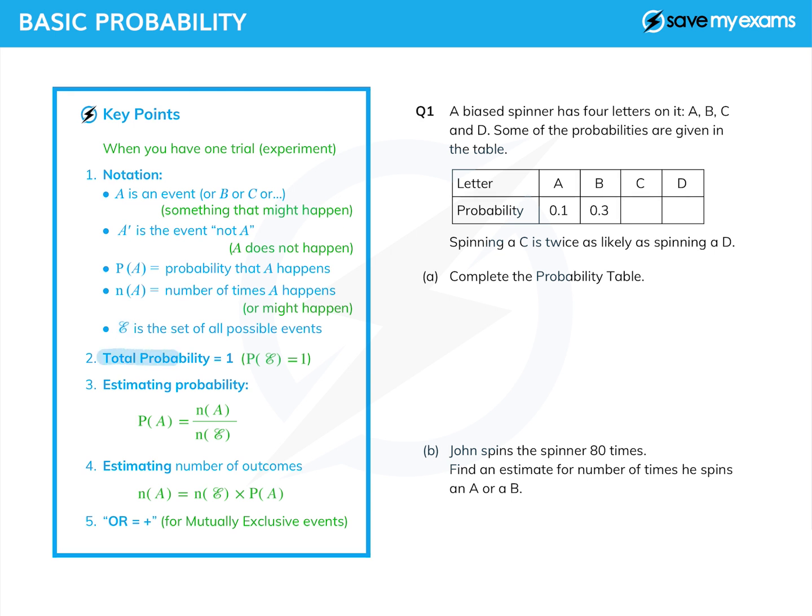And you should know that the total probability in any given trial or experiment is 1, and there we go, the probability that anything might happen equals 1.